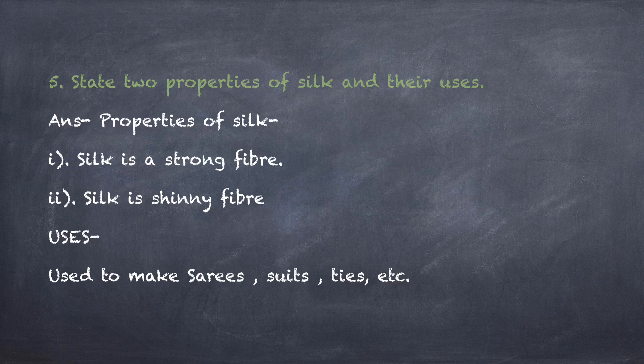Here are the properties of silk. The first property is silk is a strong fiber. The second one is silk is a shiny fiber. Uses of silk: it is used to make sarees, suits, ties, etc.